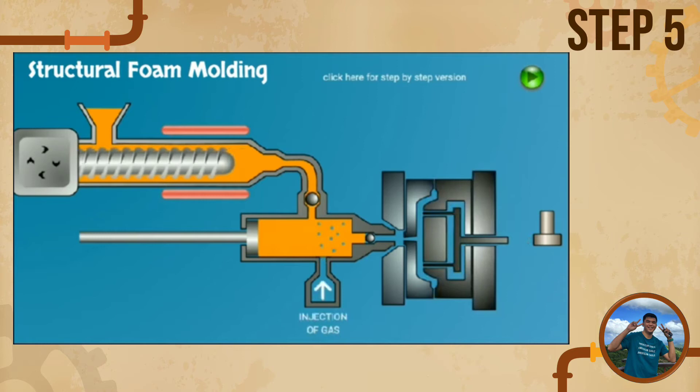This kind of process can make toolboxes, trash cans, commercial laundry bins, and pallets. Amazingly, it can also replace wood, concrete, metals, and fiberglass if desired. These applications will be discussed on the next slides.